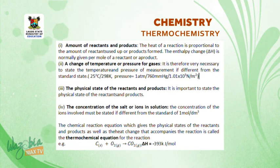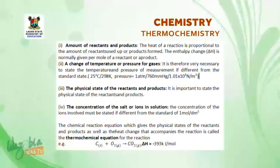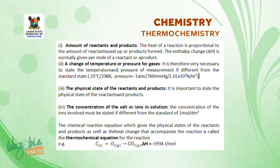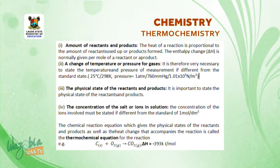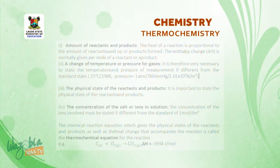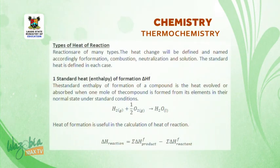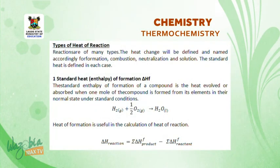For example, when carbon in solid state reacts with oxygen in gaseous state to give carbon dioxide in gaseous state, the enthalpy change for that reaction is given as delta H equals minus 393 kilojoules per mole. Types of heat of reaction.